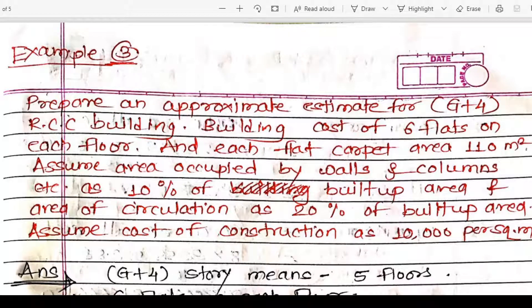Hello everyone, welcome to the next session of quantity survey estimation and valuation. In the last lecture we started problems on approximate estimation and we will continue with these. Now we will see another problem: prepare an approximate estimate for a G plus 4 RCC building with 6 flats on each floor and each flat having a carpet area of 110 square meters.